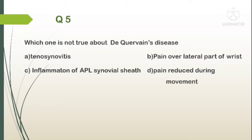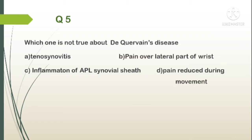Question number 5. Which one is not true about De Quervain's disease? A. Tenosynovitis, B. Pain over lateral part of wrist, C. Inflammation of APL synovial sheath, D. Pain reduced during movement. Answer: D — pain is actually increased during movement, not reduced.